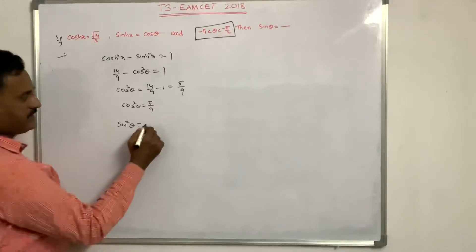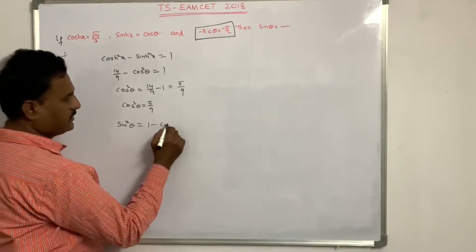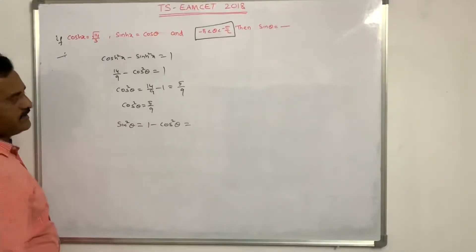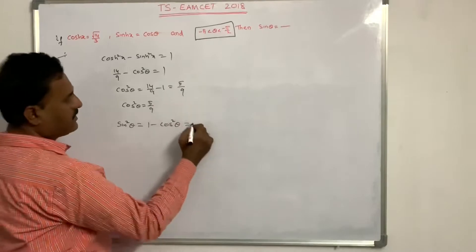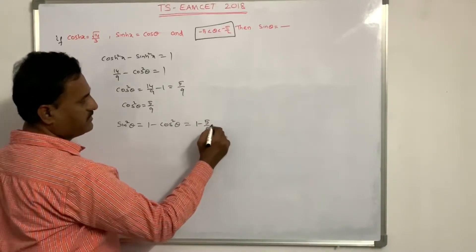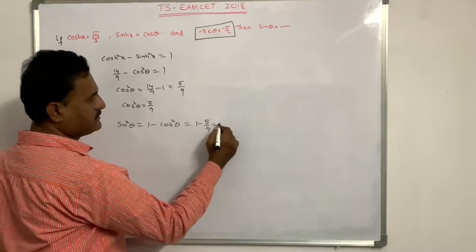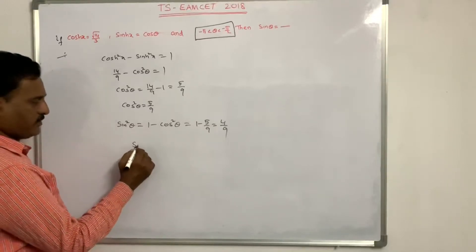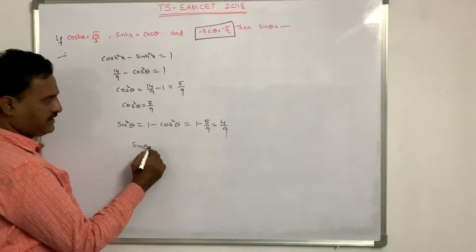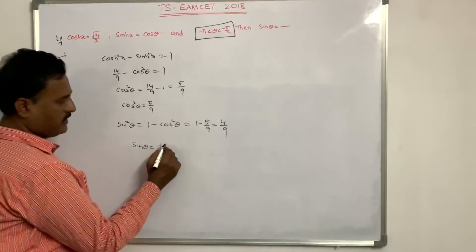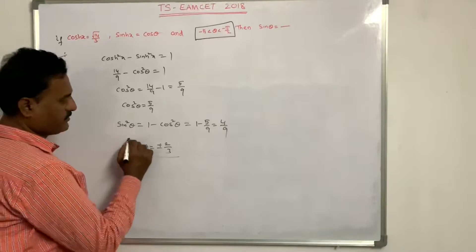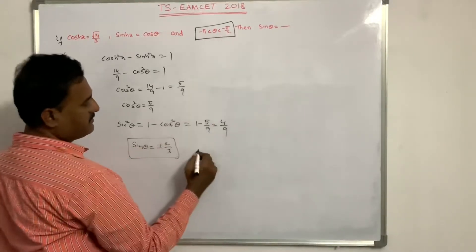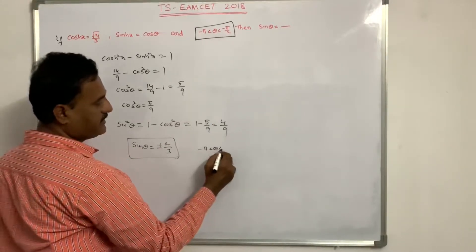Therefore sin²θ = 1 − cos²θ = 1 − 5/9 = 4/9, so sinθ = ±2/3. Since θ is in the range −π < θ < −π/2, which is the third quadrant, sinθ is negative.